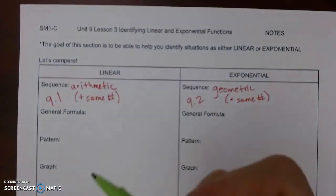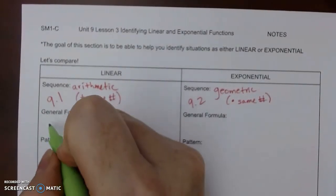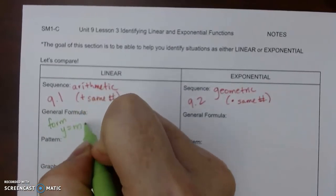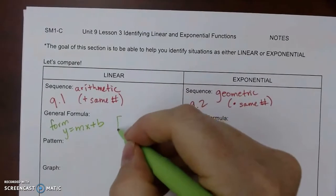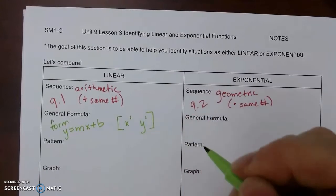A general formula, what you're going to notice is it's going to be a linear equation in the form y equals mx plus b. Now, these might be rearranged, so what you really want to notice is it's x to the first power and a y to the first power.